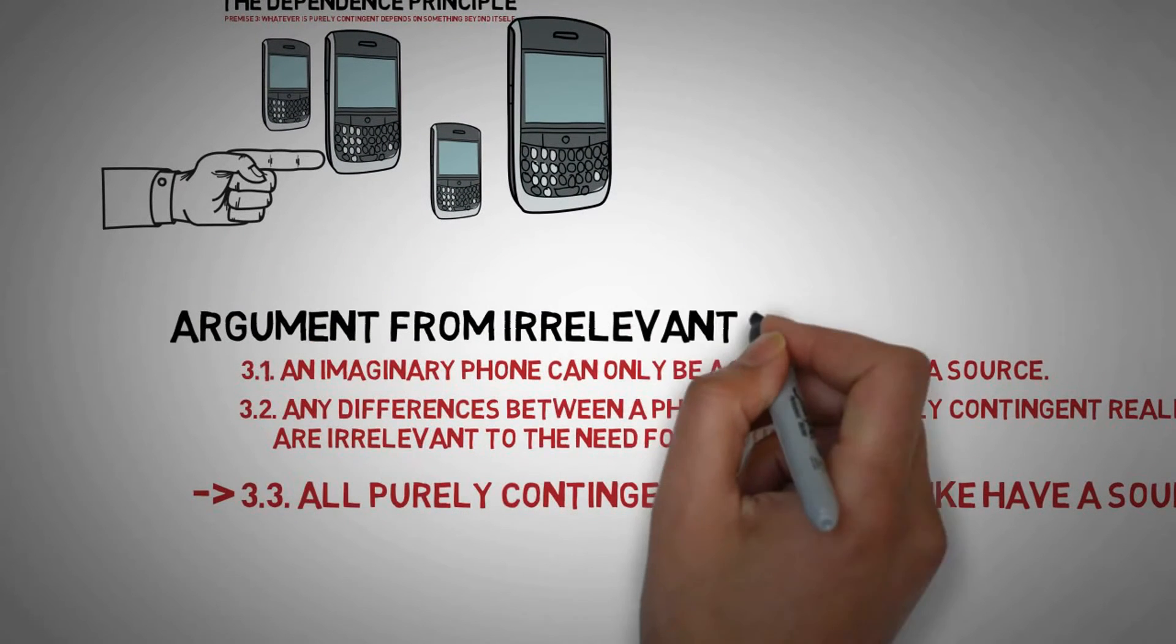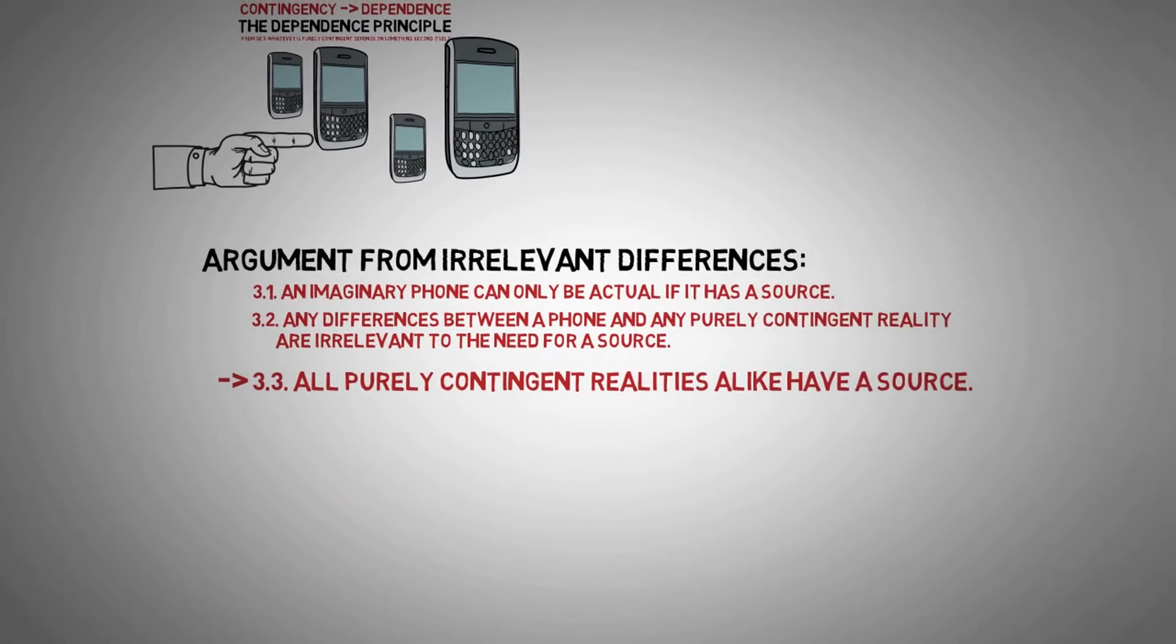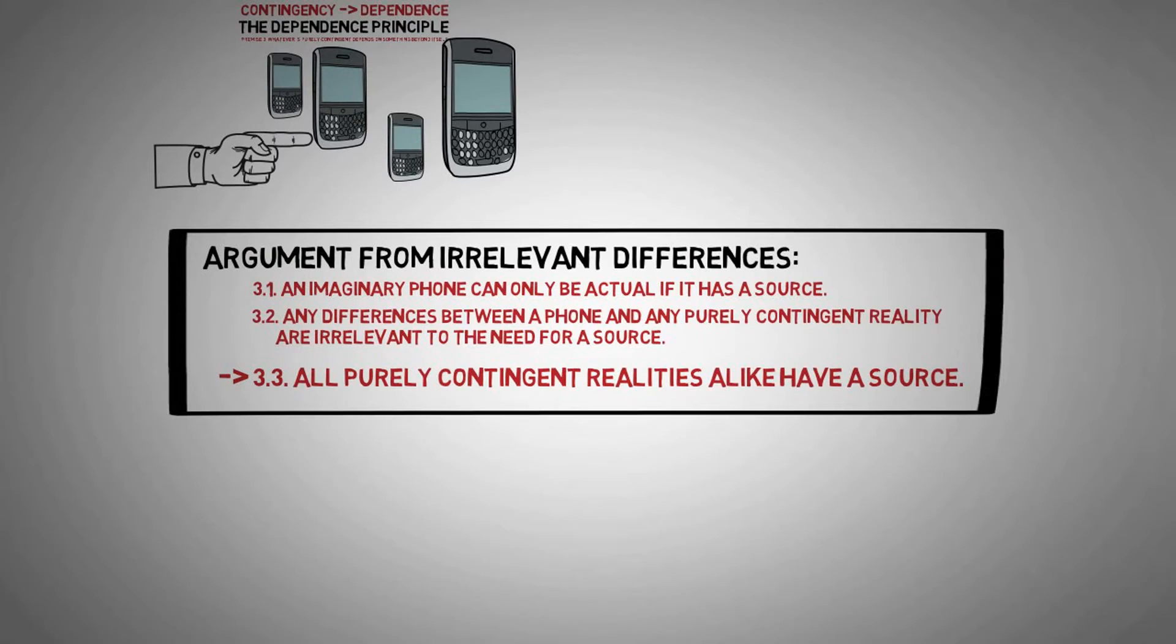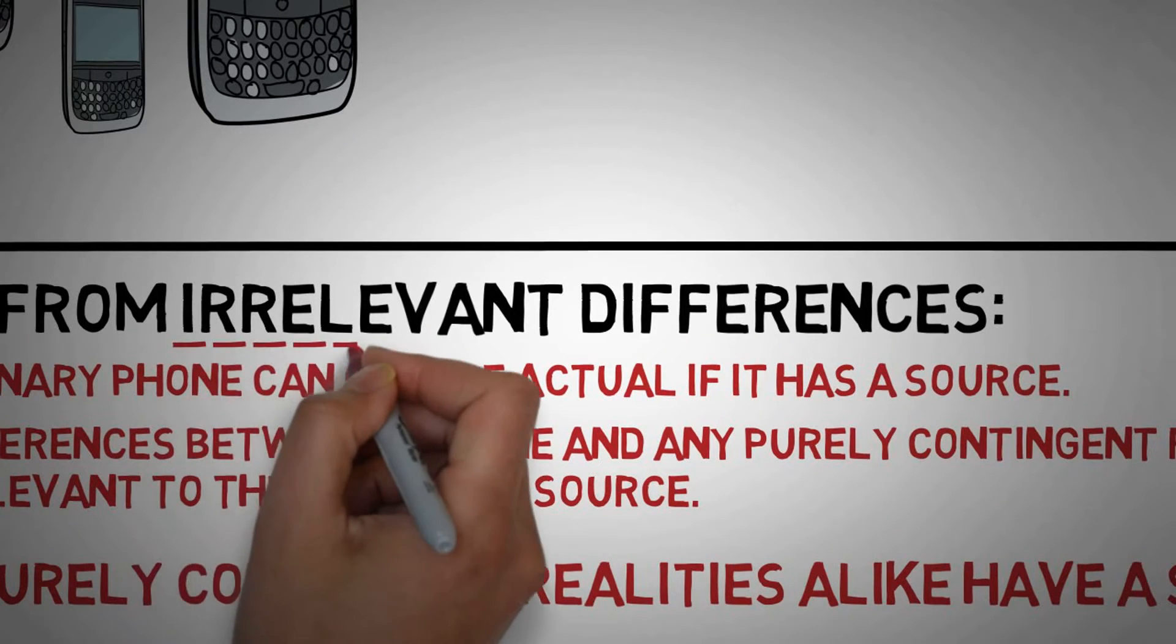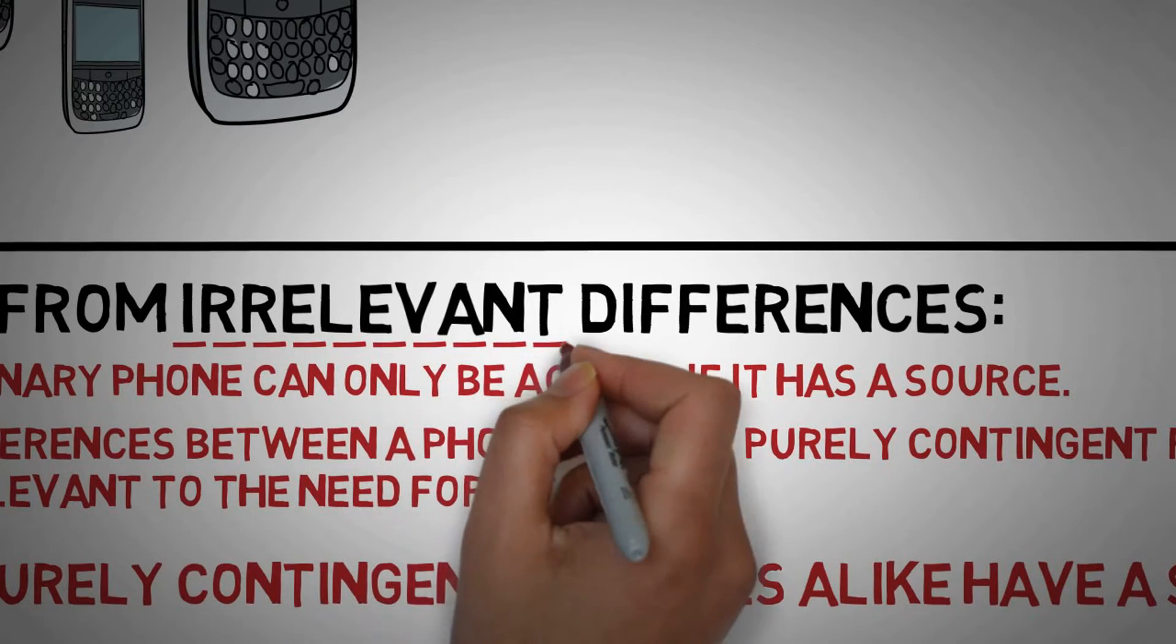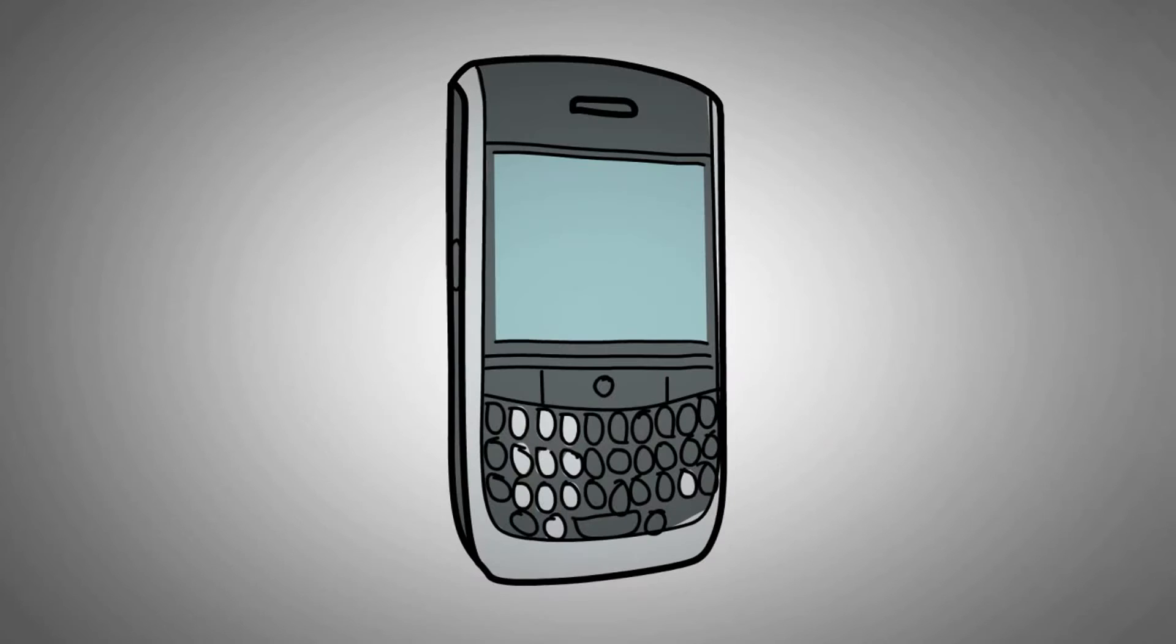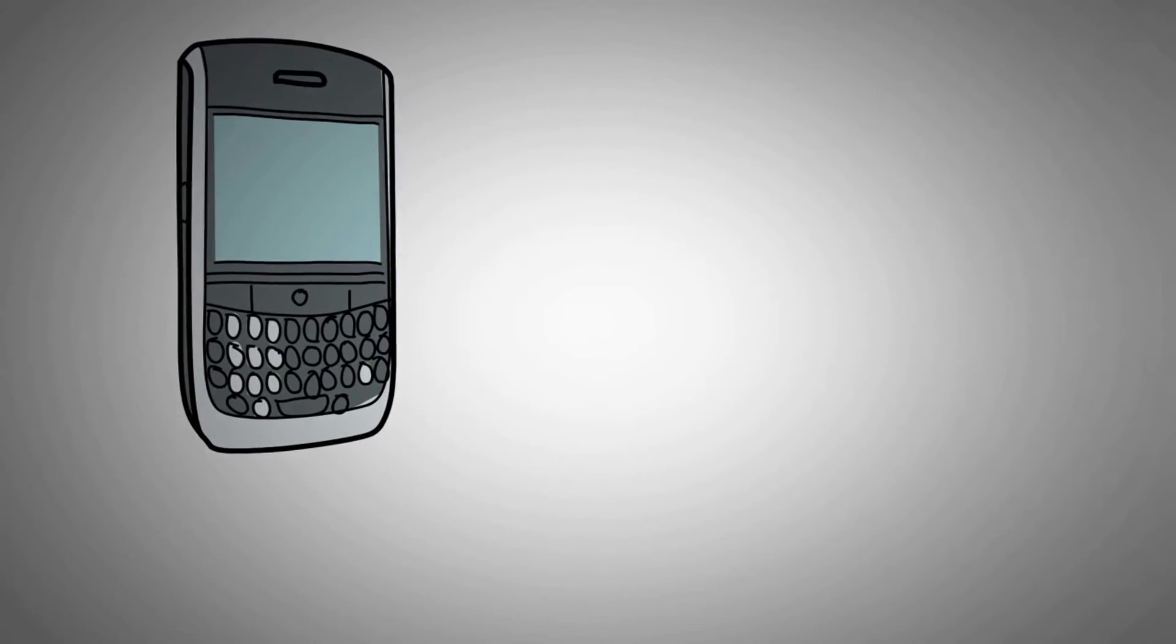This is an argument from irrelevant differences, and it matches our experience. I used to be unsure myself of the general principle of dependence, that all purely contingent realities have a source. But then I considered over time, much time, what could possibly make a difference between something with a source and something without one? Size doesn't seem to make a difference. An imaginary phone could be any size, and it still couldn't appear from nowhere, from nothing. If there were an imaginary phone the size of a planet, that wouldn't make it any easier for that phone to snap into reality.